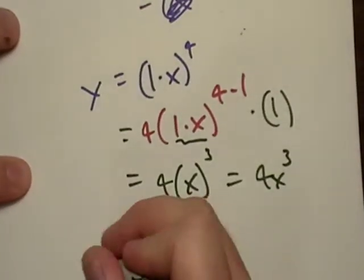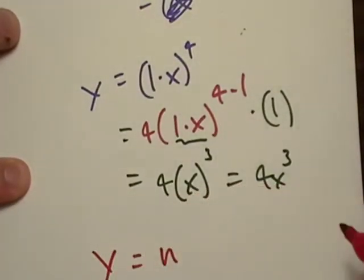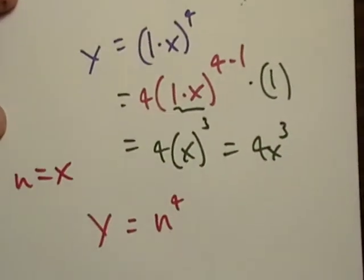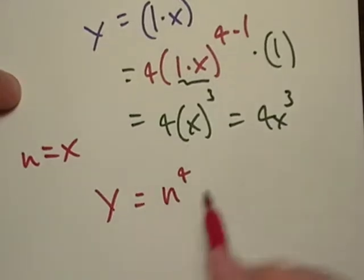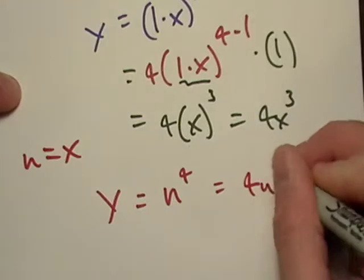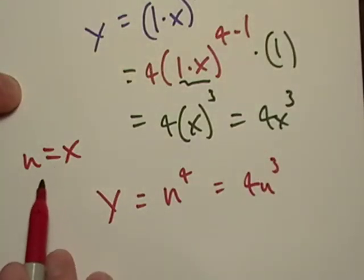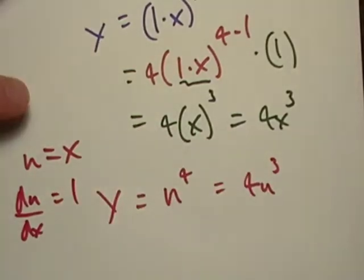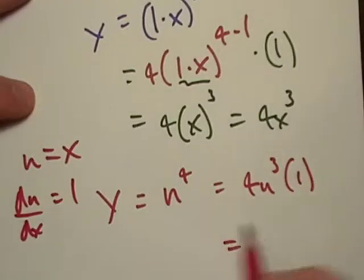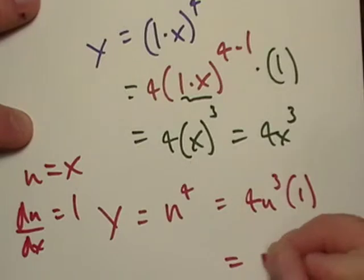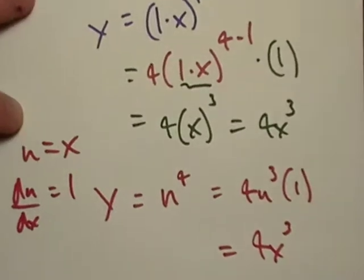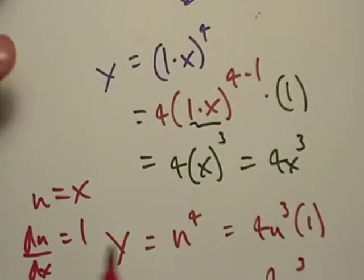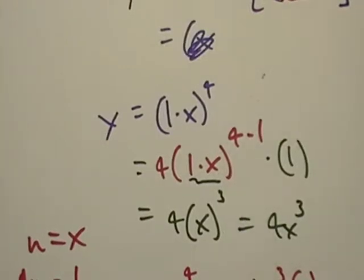You can kind of think about it as maybe a substitution. You could say u equals x. And then I could go ahead and take the derivative, which would be 4u to the third. And then I'd take the derivative of x, du dx of x, and that would be equal to 1. And then I'd multiply by 1 and rewrite my answer in terms of x. And that's really a lot more confusing, isn't it? So we don't really talk about doing things like that. We just use the power rule and we go.